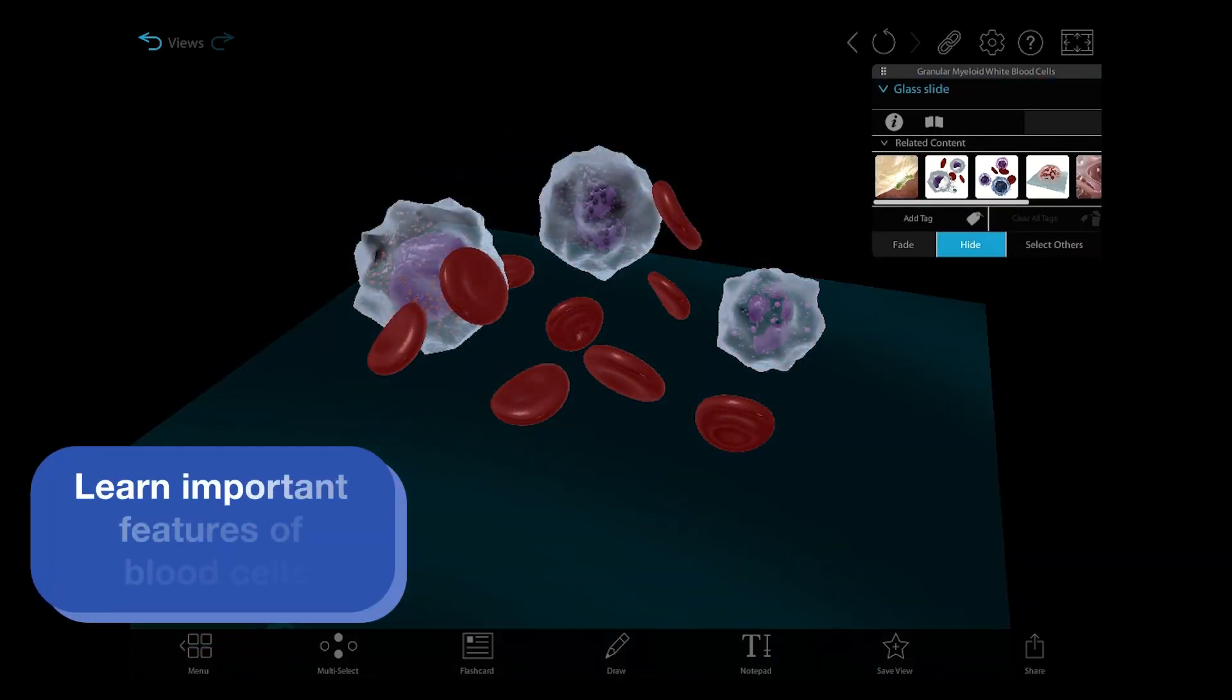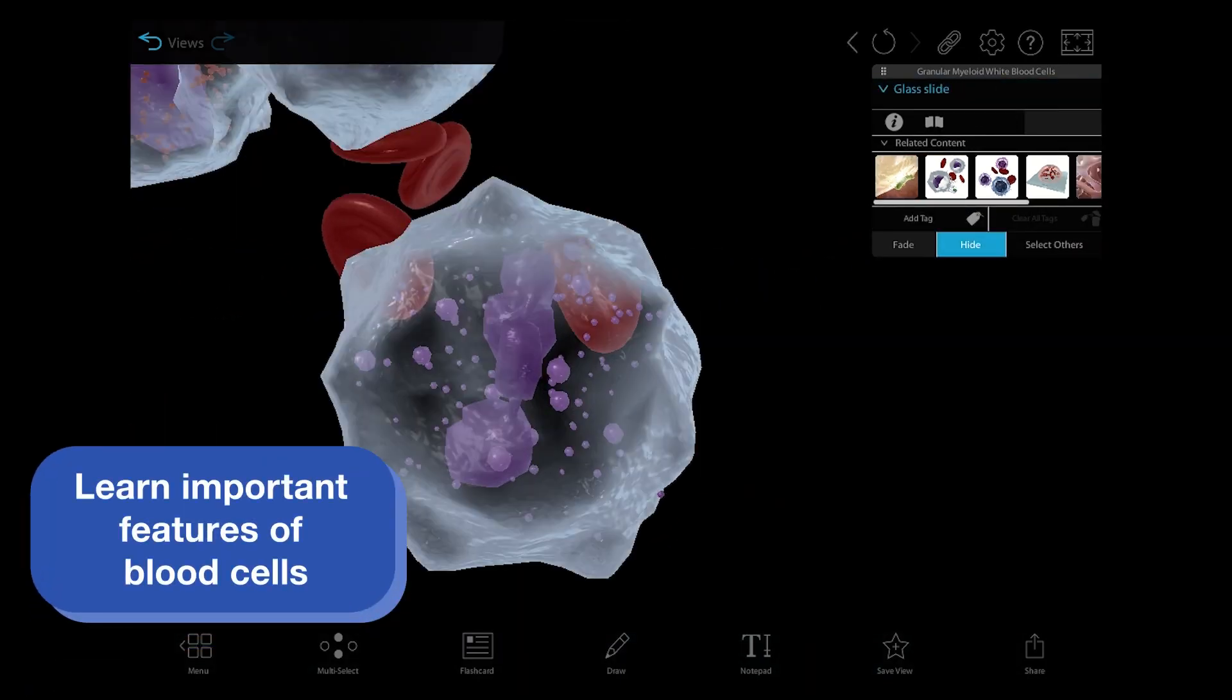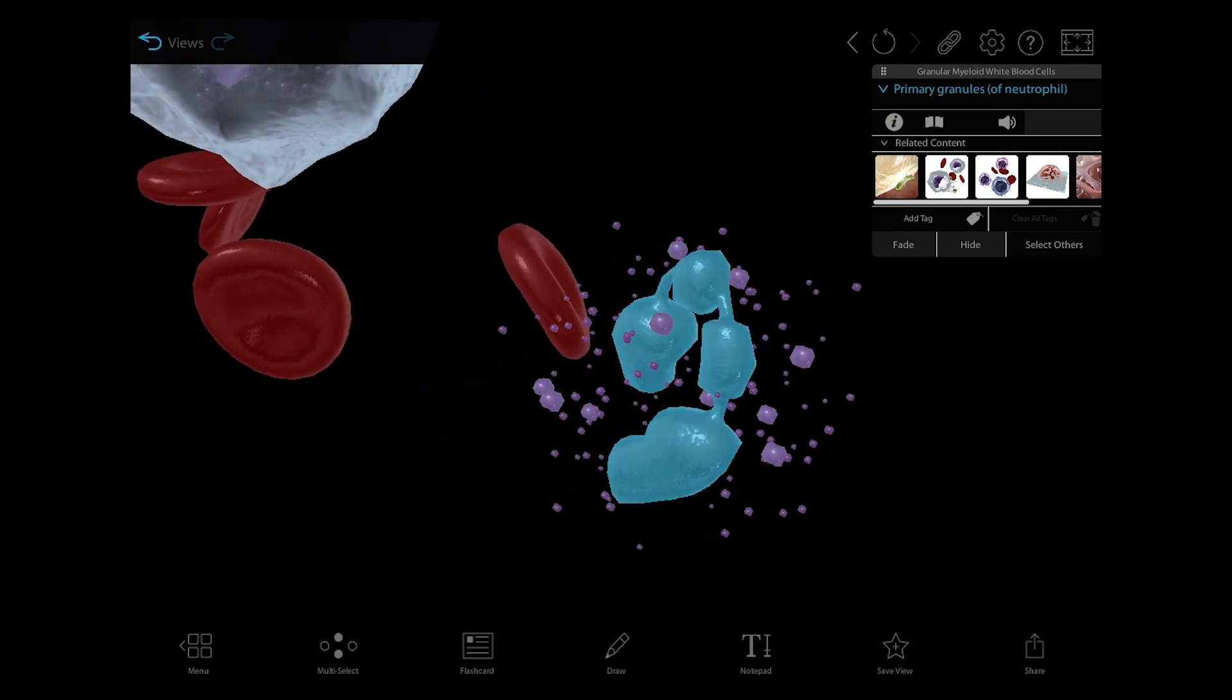Hide the plasma and zoom in to get a closer look at the internal identifying features of white blood cells such as nuclei and granules.